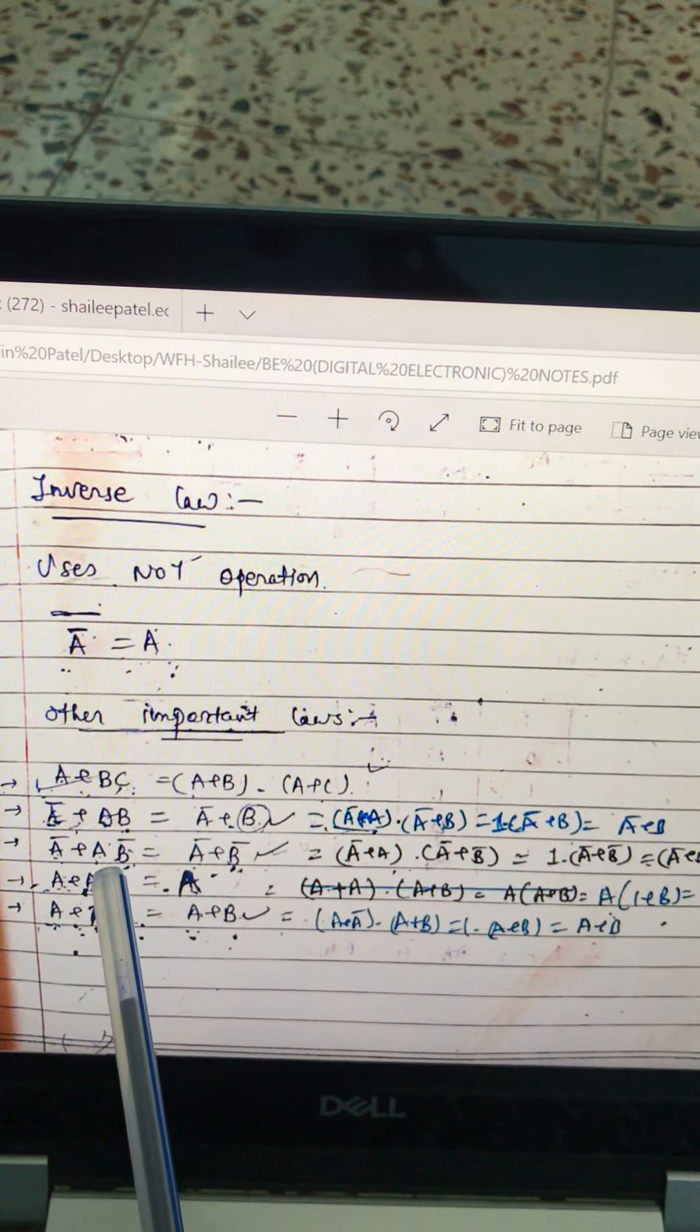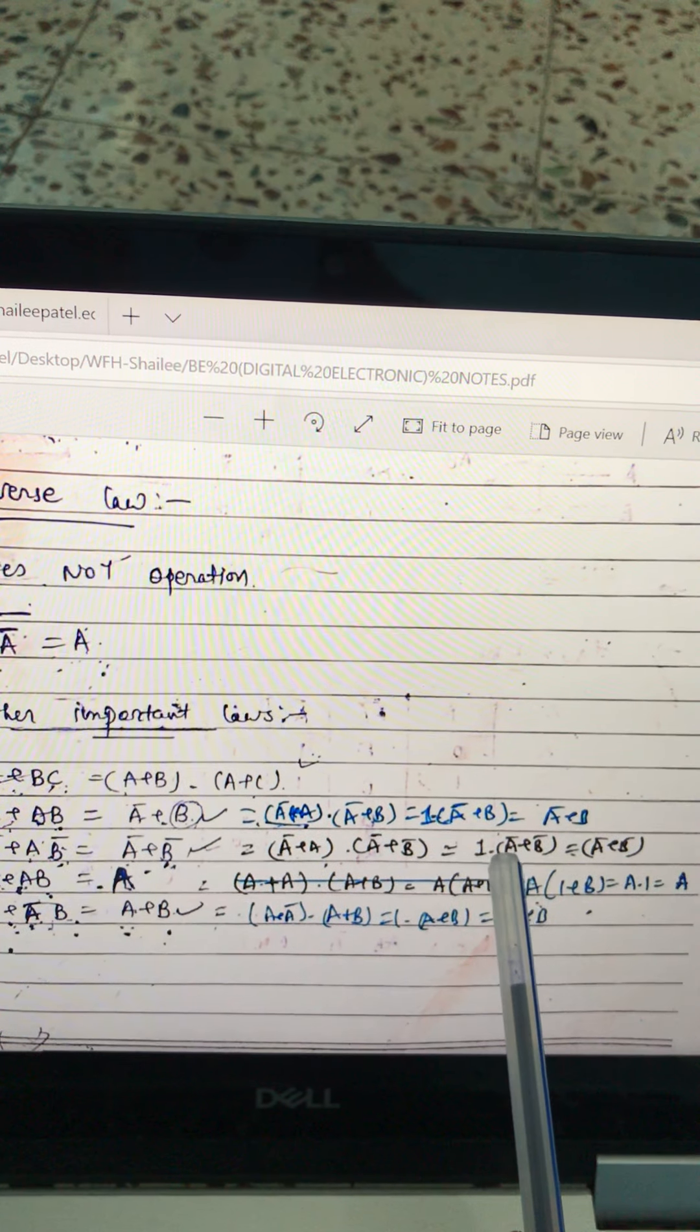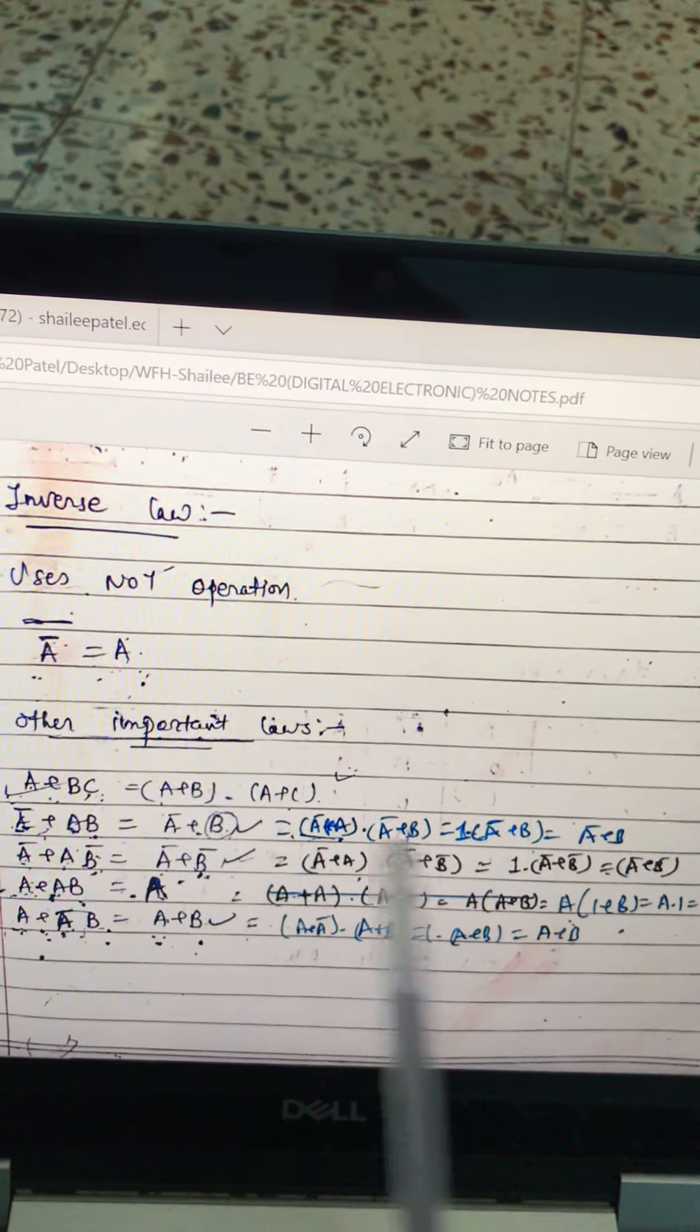Now A bar plus AB bar. Again open the bracket and apply the same procedure. You will get A bar plus B bar.